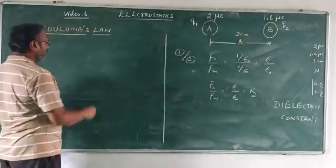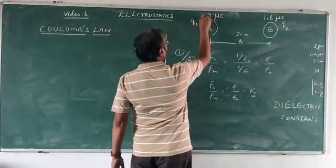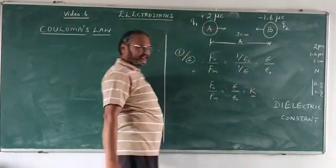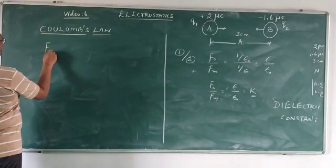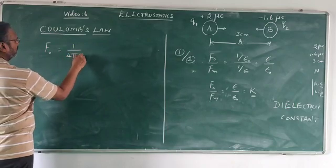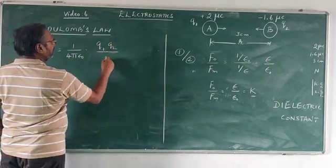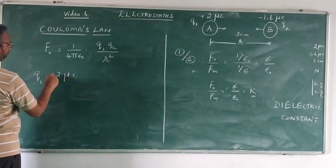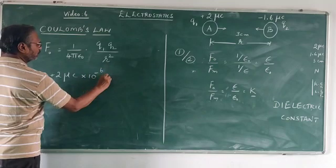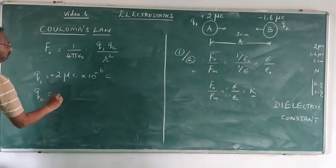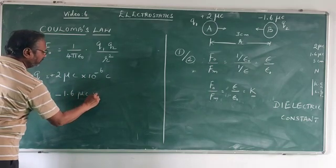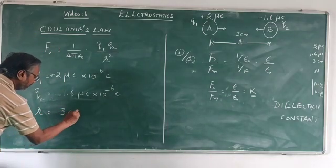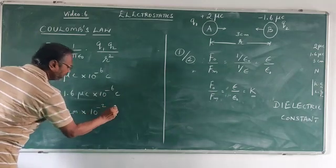Then what will be the force of, let us say they are unlike charges, one is positive and another is negative. What is the force of attraction between them? We can now calculate. So the force of attraction in air, F0 is equal to 1 upon 4 pi epsilon 0 into Q1, Q2 upon R square. Let us say Q1 is equal to 2 micro coulomb, micro is 10 power minus 6 coulomb. Q2 is equal to minus 1.6 micro coulomb multiplied by 10 power minus 6 coulomb. The distance of separation R is equal to 3 centimeter multiplied by 10 power minus 2 meter in SI unit.